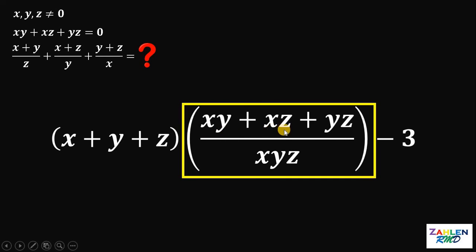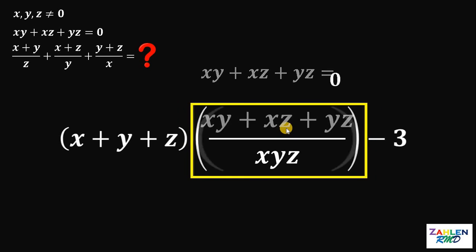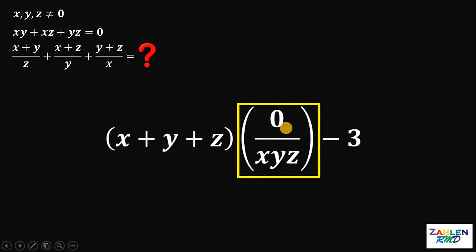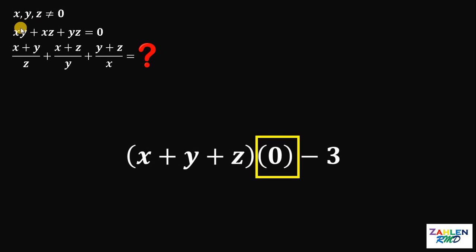Now, here comes xy plus xz plus yz equals to 0 comes into play. Because we know this is equal to 0, so we can substitute this value to this part. Now, take note that 0 divided by any number is just 0. And also, take note that xy and z are not equal to 0. Now, 0 times x plus y plus z is also 0.